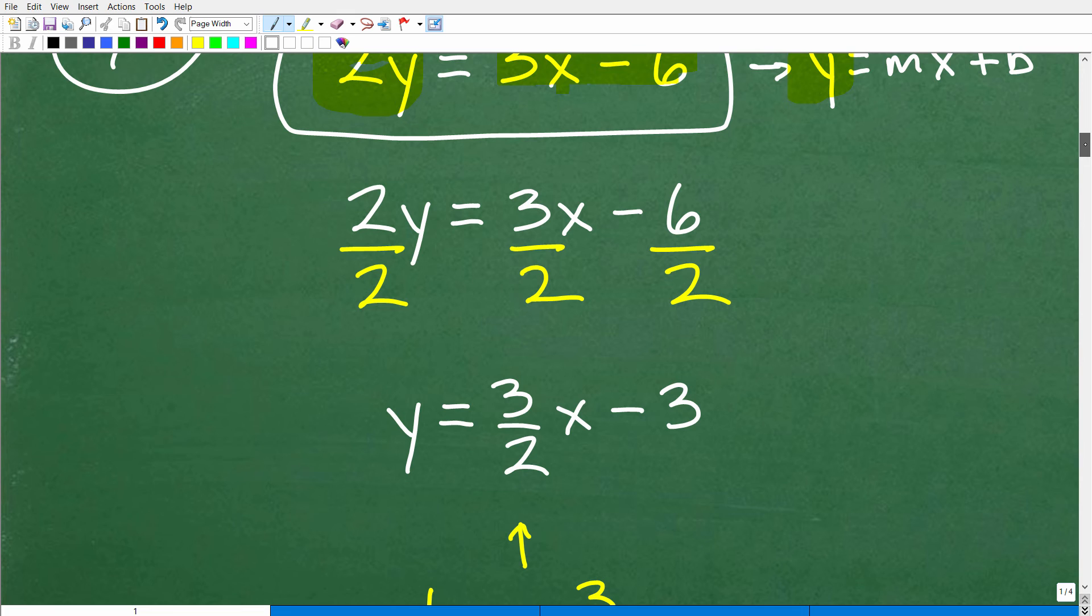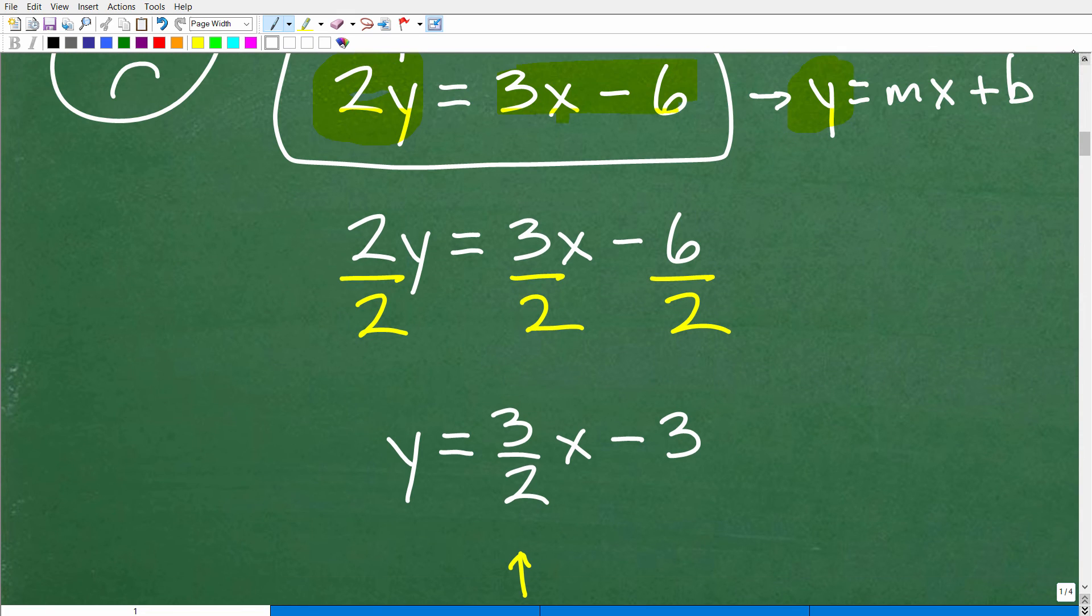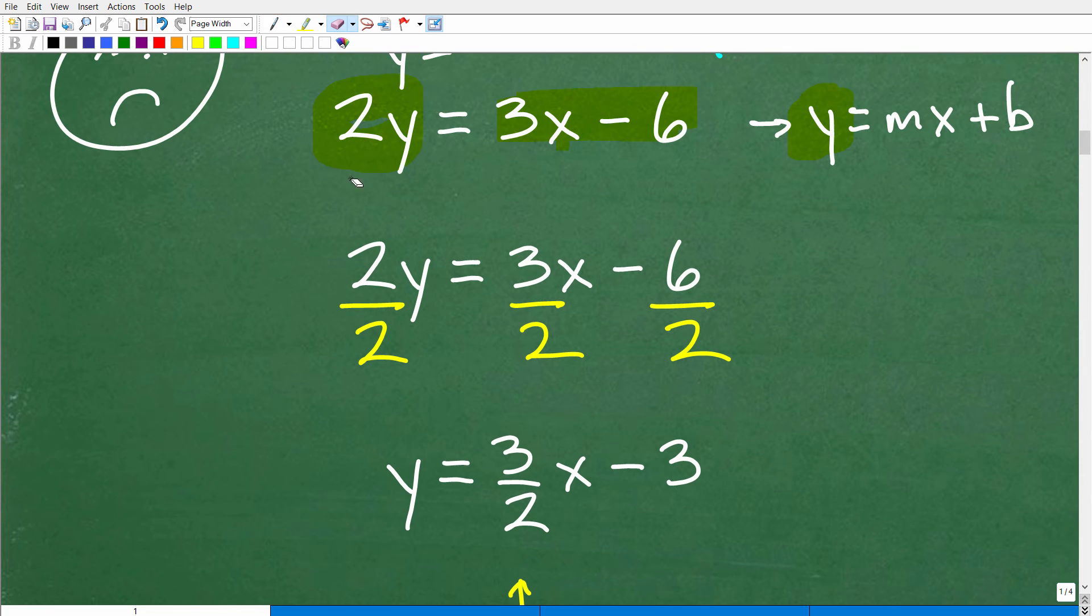Well, this is quite easy. All we need to do, let me go ahead and just erase this so we can kind of concentrate here. So to get y by itself, if I have a 2y right here, all I need to do is simply divide the entire equation, each term of the equation, by 2.